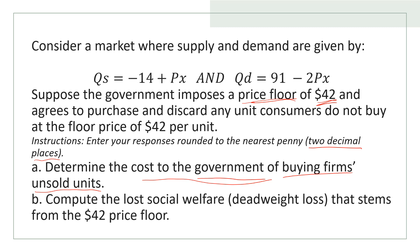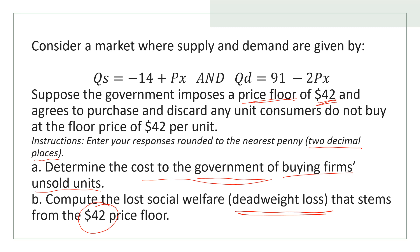This loss in social welfare, which we call dead weight loss — so if $42 is the price floor, how much will our dead weight loss be? Let's start the question. Firstly, we do part one.